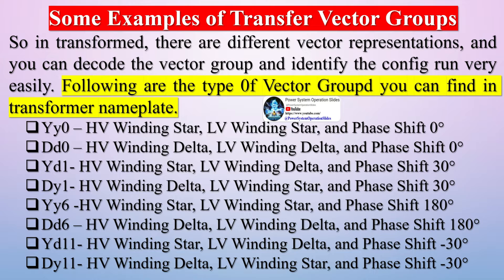The vector group designation indicates the windings configurations and the difference in phase angle between them. For example, a star HV winding and delta LV winding with a 30-degree lead is denoted as YD11.